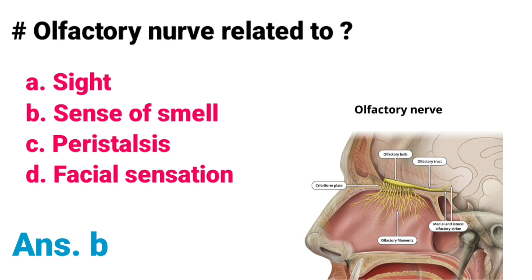Olfactory nerve is related to: A) Sight, B) Sense of smell, C) Peristalsis, D) Facial sensation. Correct answer is option B, Sense of smell. The olfactory nerve is the first cranial nerve that contains sensory nerve fibers related to the sense of smell. So the olfactory nerve is related to the sense of smell; it is the first cranial nerve.